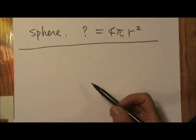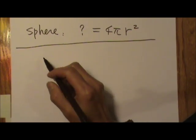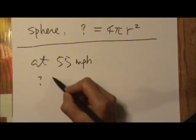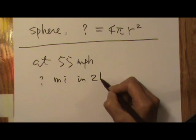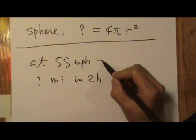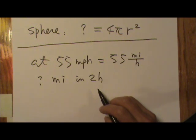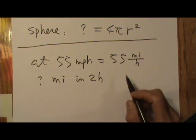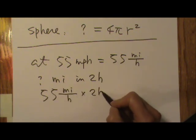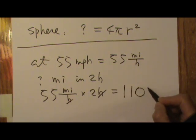So you can really get some good information from units and dimensional analysis. One more example. If you travel at 55 miles per hour, how many miles would you travel in two hours? Miles per hour, that is miles per hour. You can see that if you multiply 55 miles divided by hours by two hours, the hours would cancel and you will get 110 miles.